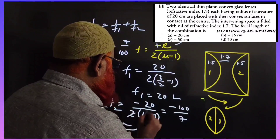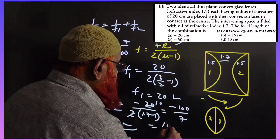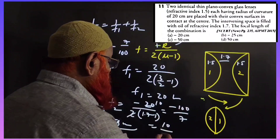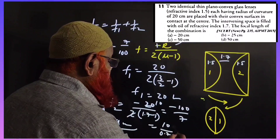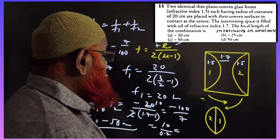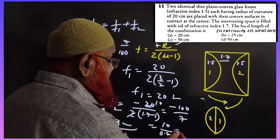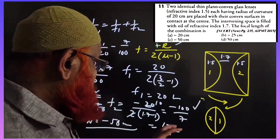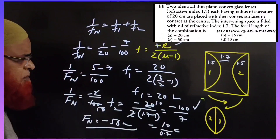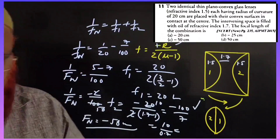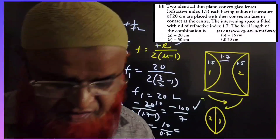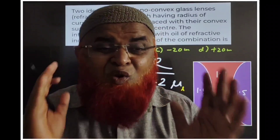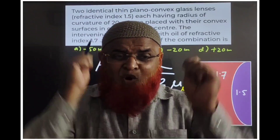To clarify the arithmetic: −20/(2 × 0.7) = −10/0.7. Multiplying numerator and denominator by 10 gives −100/7. So in a super simple way, the answer is f_net = −50 centimeters.